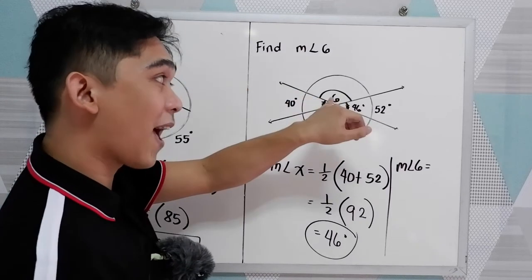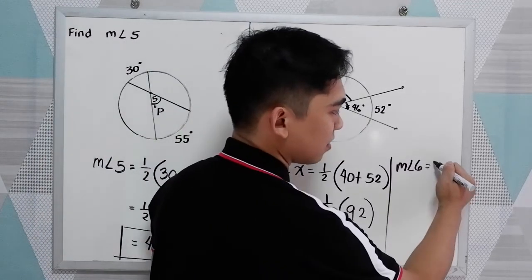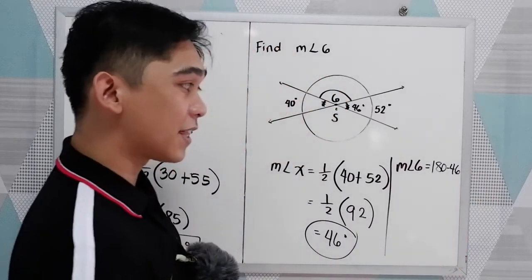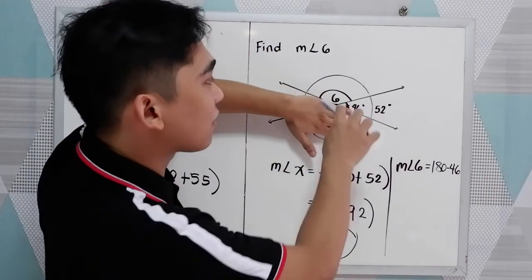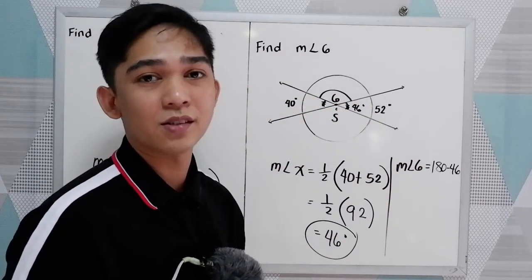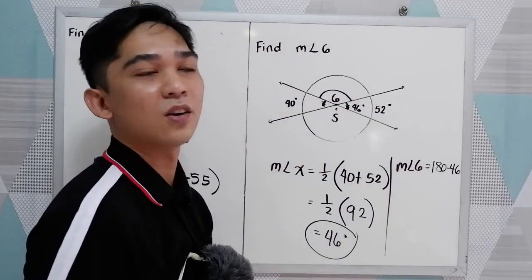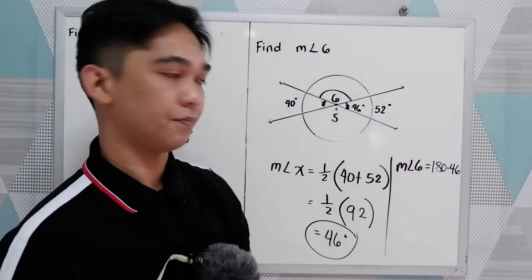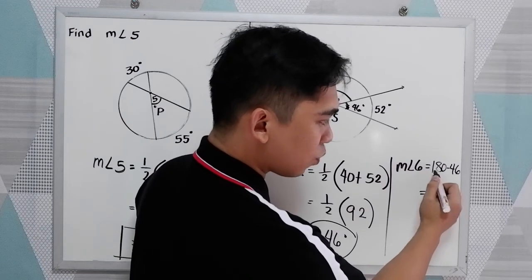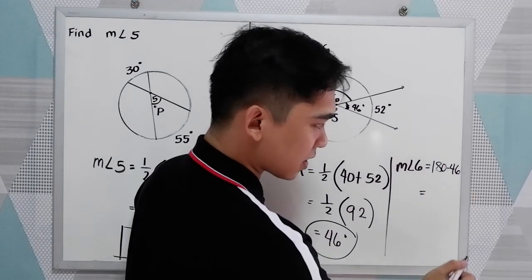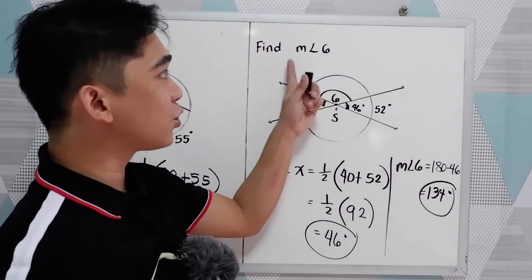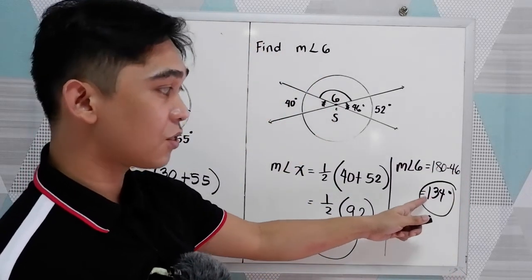So to get angle 6, we need to subtract 46 from 180. Okay, 180 minus 46. Why? Because the total of the two angles is equal to 180 degrees. They are supplementary, or they form a linear pair. Now, 180 minus 46, that is 134 degrees. So the measure of angle 6 is 134 degrees.